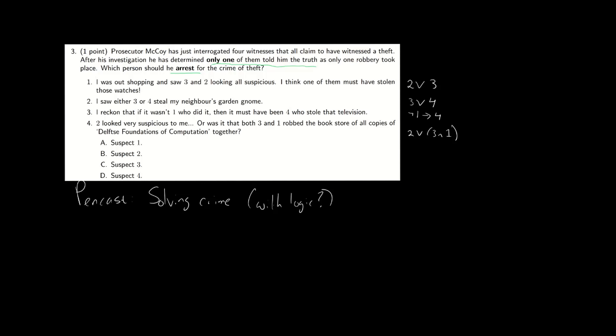Okay, so we know that only one person told the truth. So what happens if they lie? Well, if the first one lies, then two and three didn't do it. The second one, three and four both didn't do it. The third, well that's a little bit more complicated, but it must mean that one and four didn't do it. And in case of the last one, it wasn't two and it wasn't three or it wasn't one.